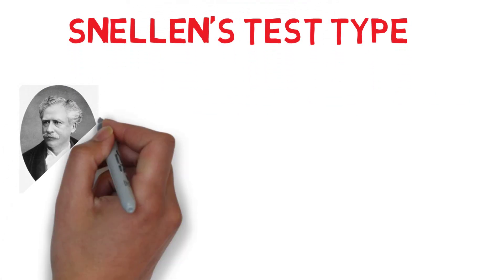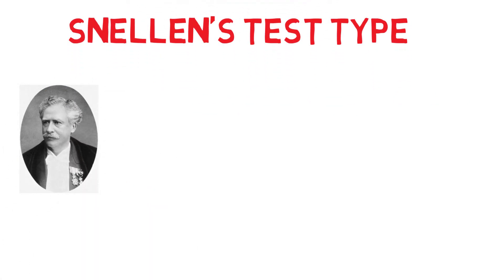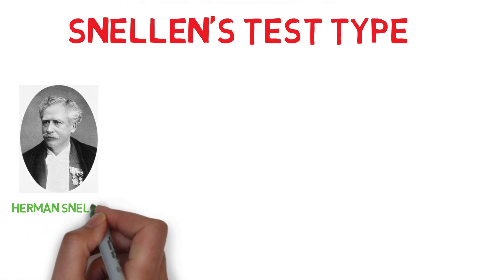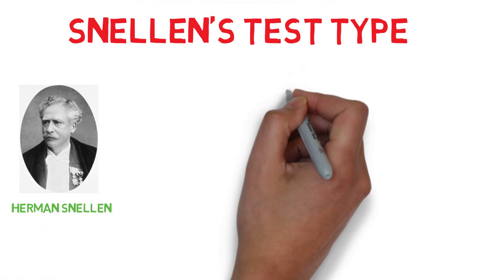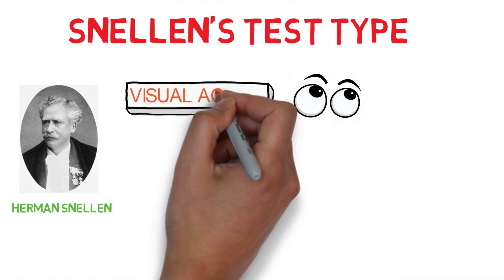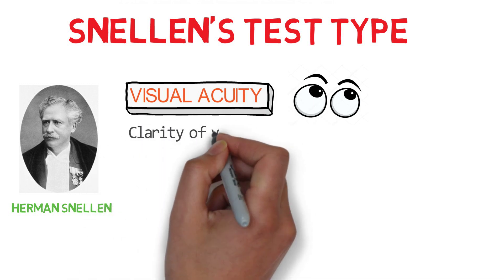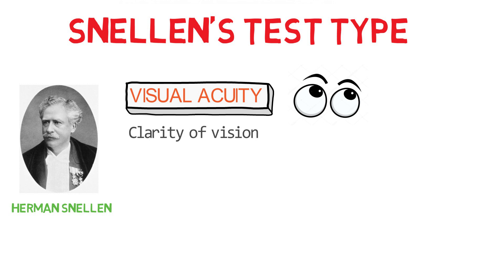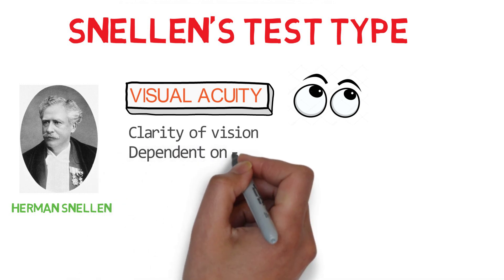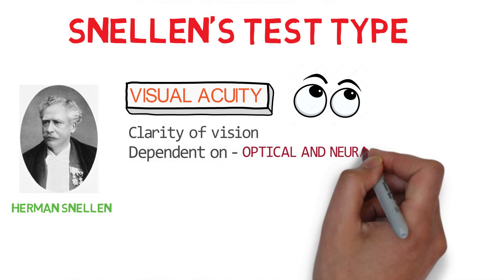It is named after a Dutch ophthalmologist Herman Snellen who developed it in 1862. It is used to measure visual acuity. What do we mean by visual acuity? Well, it refers to clarity of vision and is therefore dependent on both optical and neural factors.